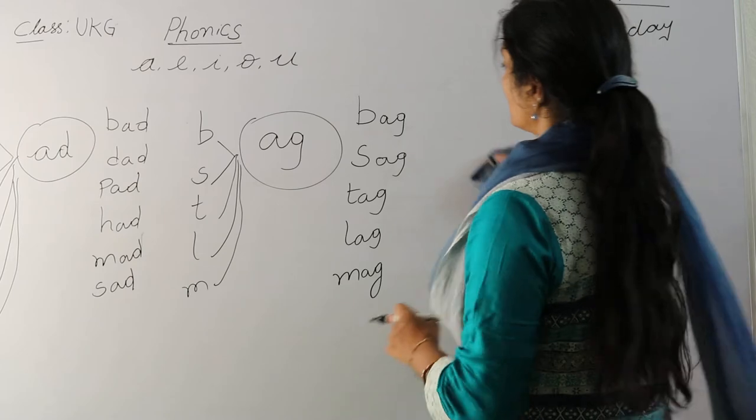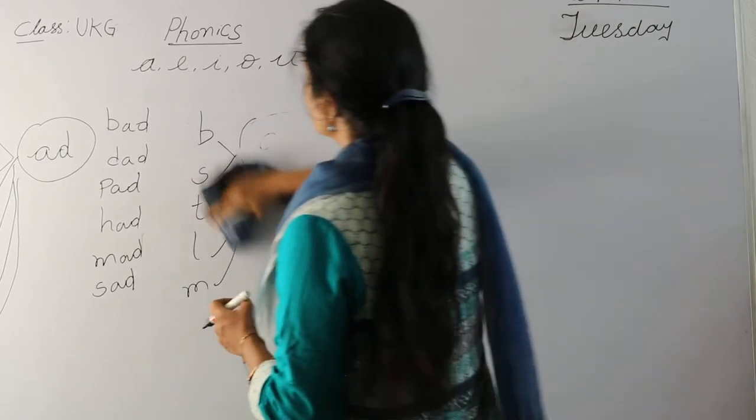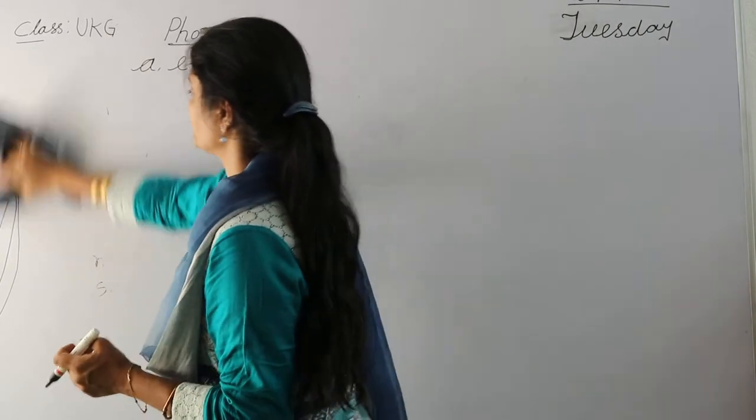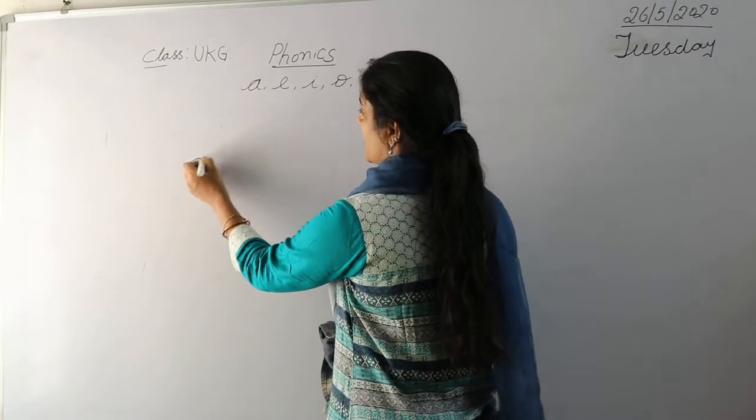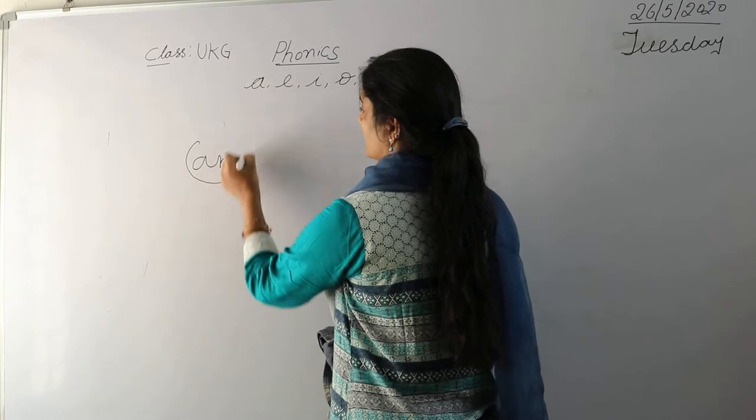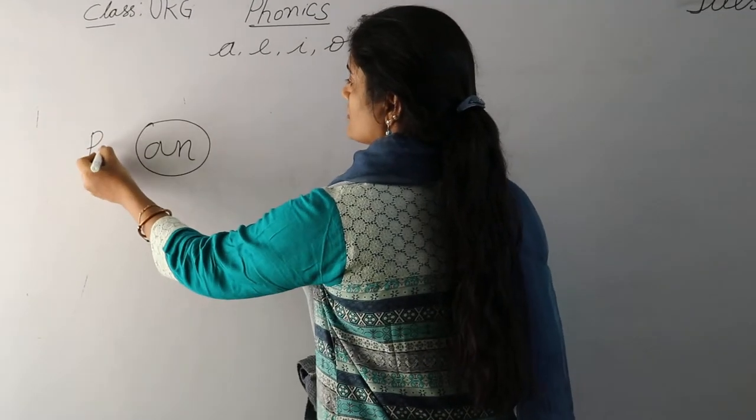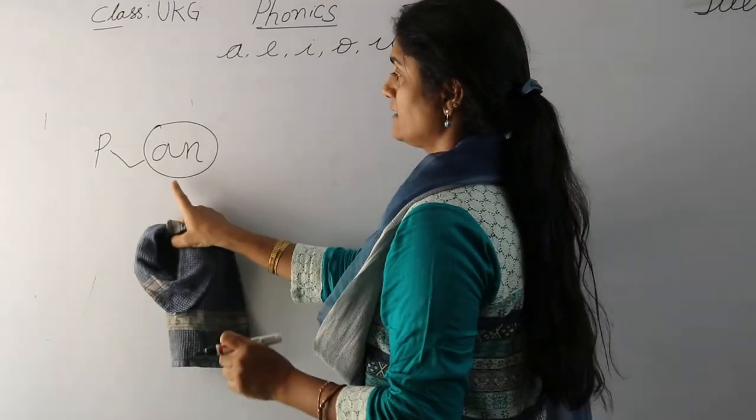Now let's learn some more words with the letter sound A. Now the next word is A-N. An. So P-an, pan.